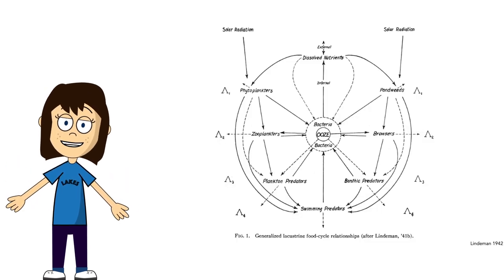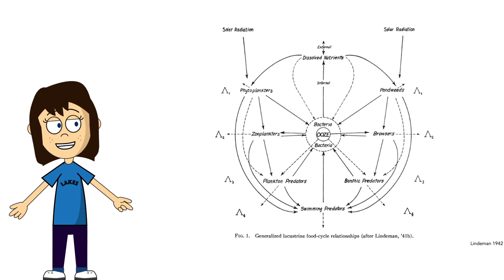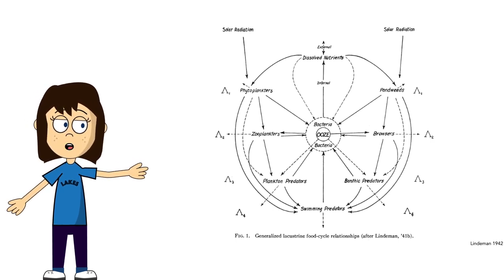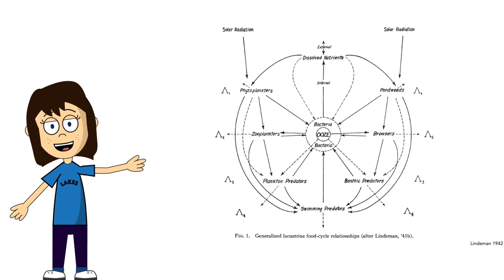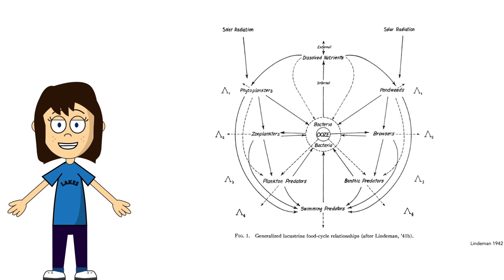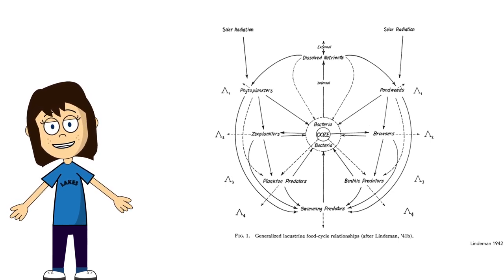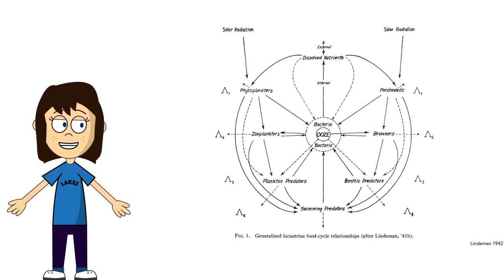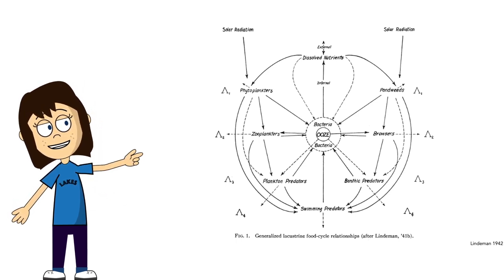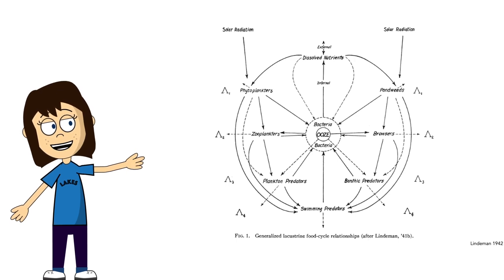Lakes were also one of the first places ecologists started thinking about energy flows. This is a famous diagram from a 1942 paper on the trophic dynamic aspects of ecology, where Raymond Lindemann studied the succession of Cedar Creek bog in northern Minnesota, providing a whole new way of viewing aquatic systems through the idea of energy flow — only six years after the word 'ecosystem' was coined. This insight allowed researchers to aggregate and organize some of the complexity of aquatic ecosystems.